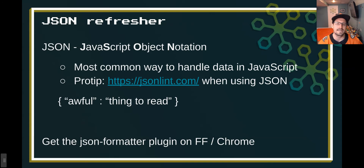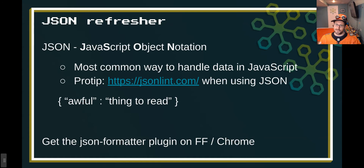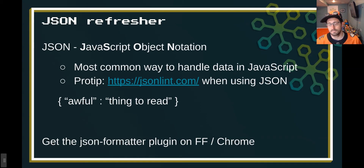So a refresher on JSON. We've got to go way down the well before we can get to our revolution built on brackets. JSON is short for JavaScript Object Notation — the most common way to handle data in JavaScript. Pro tip: if you're writing JSON, go to jsonlint.com — some service like that just says 'yep, this is valid' or 'nope, you missed some random semicolon 40 miles down into this thing' and it'll point out where it is. Also, getting the JSON formatter plugin for Firefox or Chrome is a big help.